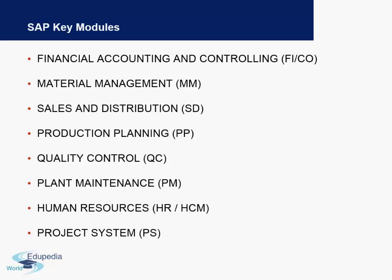Let's look at the key modules within SAP — important whether you are a consultant, aspiring consultant, or end user. The first module is Financial Accounting and Controlling, also called the FICO module. This is the module we will concentrate on in detail in forthcoming videos. The second is Material Management, also called MM, and third is Sales and Distribution, also called SD, and Production Planning, also called PP.